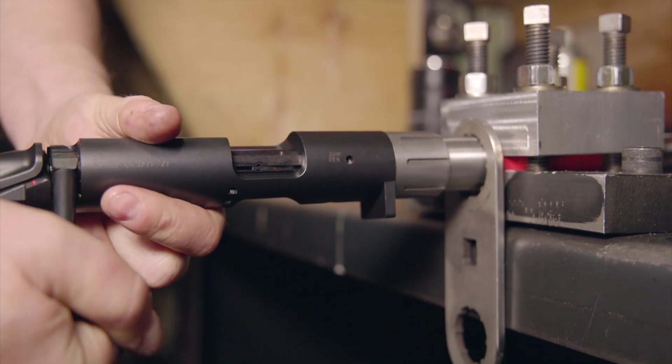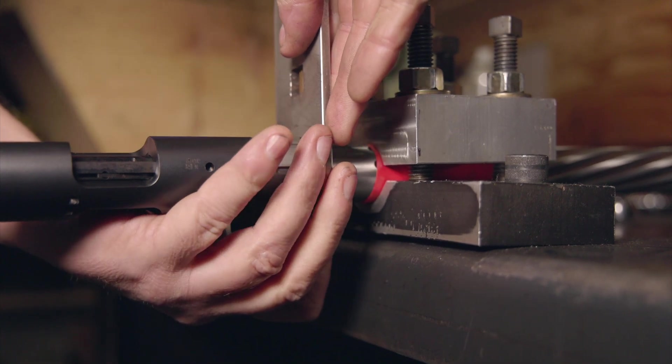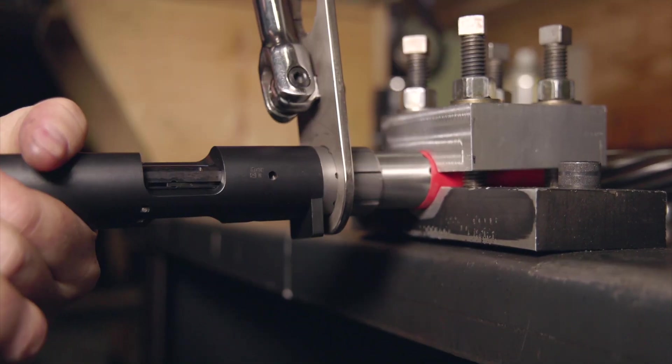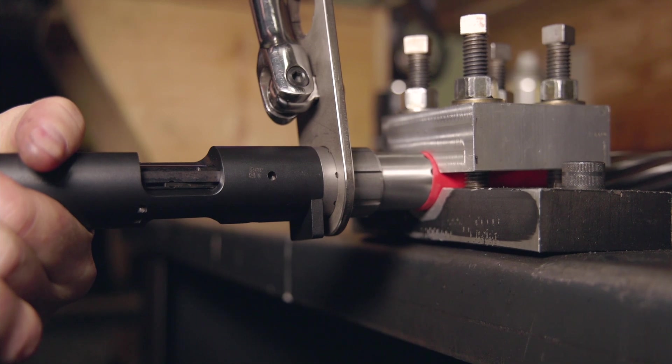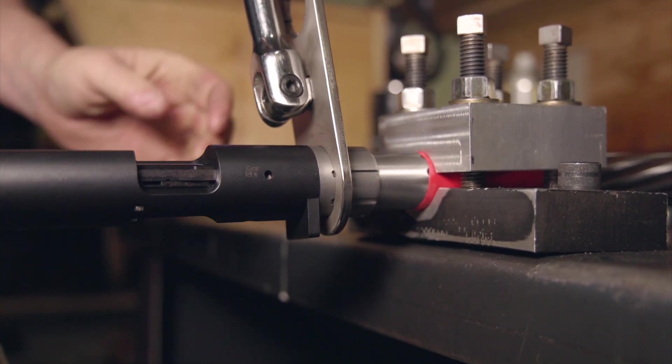We're going to put the barrel wrench on and tighten up the barrel wrench to around 70 pounds or tighter. And that's about all it takes.